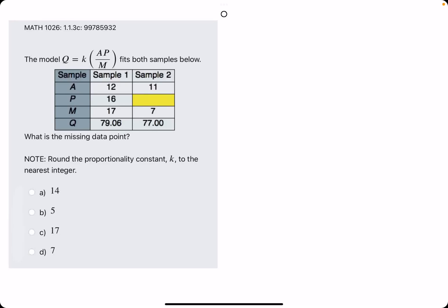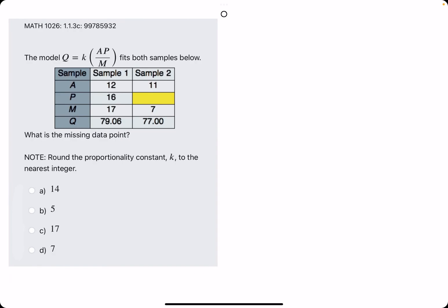In this problem, they give us an equation relating Q, K, A, P, and M. Then they give us a table of A, P, M, and Q values from two different samples where one P value is missing.